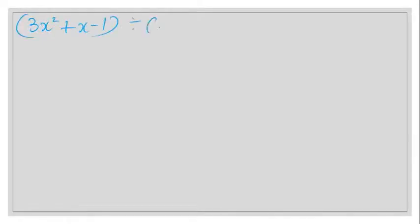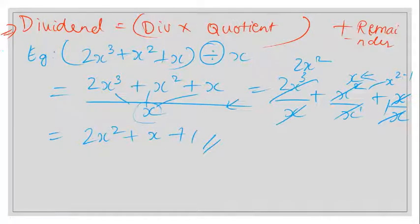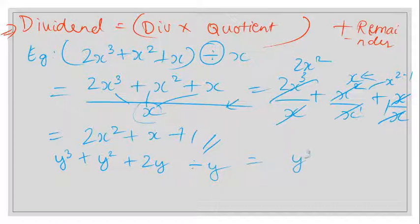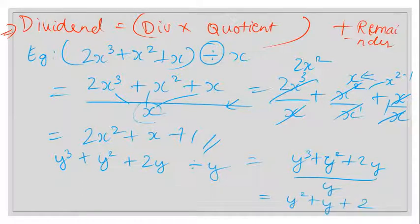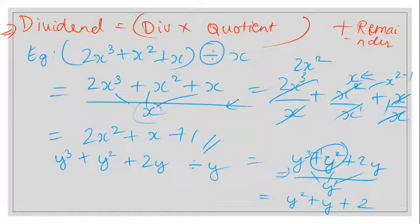Let's try another example: (y³ + y² + 2y) ÷ y. Splitting each term: y³/y = y², y²/y = y, and 2y/y = 2. So the answer is y² + y + 2. Let me know in the comments if you already knew how to do this.